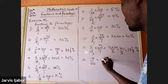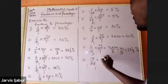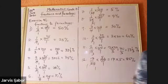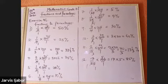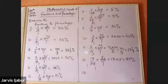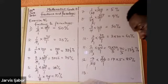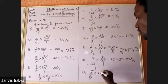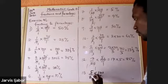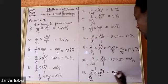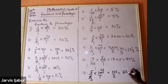Number twelve: 17 over 20 times 100 over 1 — 17 times 5 gives 85 percent. Number thirteen: 20 over 8 times 100 over 1 — 4 goes into 8 twice, 4 goes into 100 twenty-five times — giving 125 divided by 2, which is 62.5 percent.